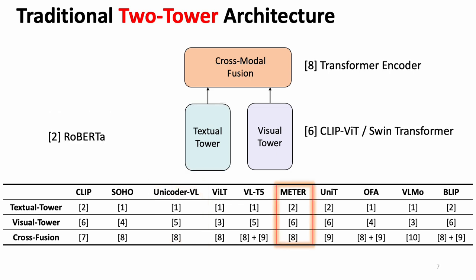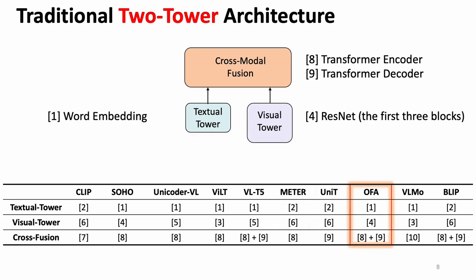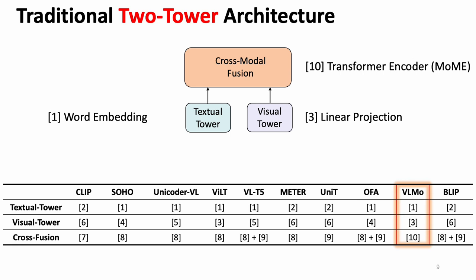Meta proposed by Microsoft Azure AI uses RoBERTa as a textual tower, and CLIP ViT or Swin Transformer as a visual tower. OFA uses the first three blocks of ResNet as its visual tower, and employs transformer encoder and decoder as its cross-modal fusion modules. Recently, WellMore proposed by our NLC group directly used word embedding and linear projection as its unimodal towers, and focuses on the use of mixture of modality experts in the cross-modal fusion module.